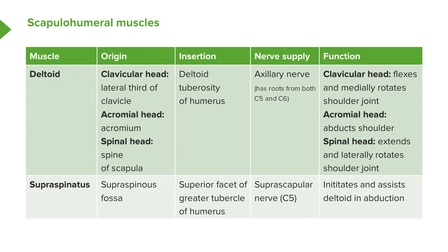The clavicular head is important in flexing and medially rotating the shoulder joint. The acromial head is important in abducting the shoulder — moving the arm outwards. The spinal head extends and laterally rotates the shoulder joint. Because of the wide attachment and widespread origin of the muscle, it can have a number of functions. The acromial head's ability to abduct the shoulder works alongside supraspinatus.